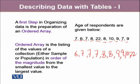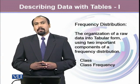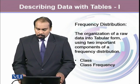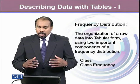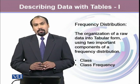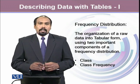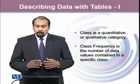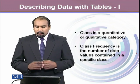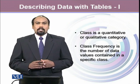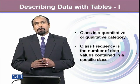To describe our data in tabular form, the first thing we created is an ordered array. Once we obtain the ordered array, we arrange our data into a frequency distribution. Frequency distribution is a method used to organize raw data into tabular form using two important components: the first component is class, and the second component is class frequency. Class frequency is the number of data values contained in a specific class, helping us to describe how many observations are in each category.